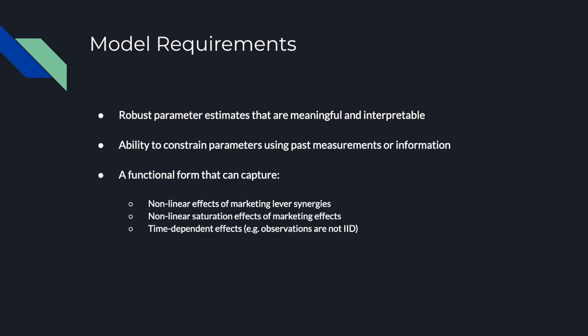A model of this nature that is not only meant to capture correlation but be used for causal inference in future periods requires more than just good fit and accurate predictions. Some of these other requirements ultimately led us to work on Orbit. We needed robust parameter estimates that are meaningful and interpretable — meaning we don't expect the impact of marketing levers to change drastically through different time periods. Even if we are estimating and fitting this model regularly, we shouldn't see wide, drastic swings on these estimates.